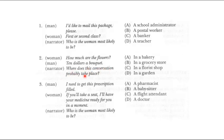For a question about where a conversation takes place, we pay attention to keywords like 'flowers' and 'bouquet,' and since there is a transaction, we can determine they are in a florist shop, not a garden. For another question, keywords like 'prescription,' 'take a seat,' and 'your medicine ready' help us identify the second speaker as a pharmacist.